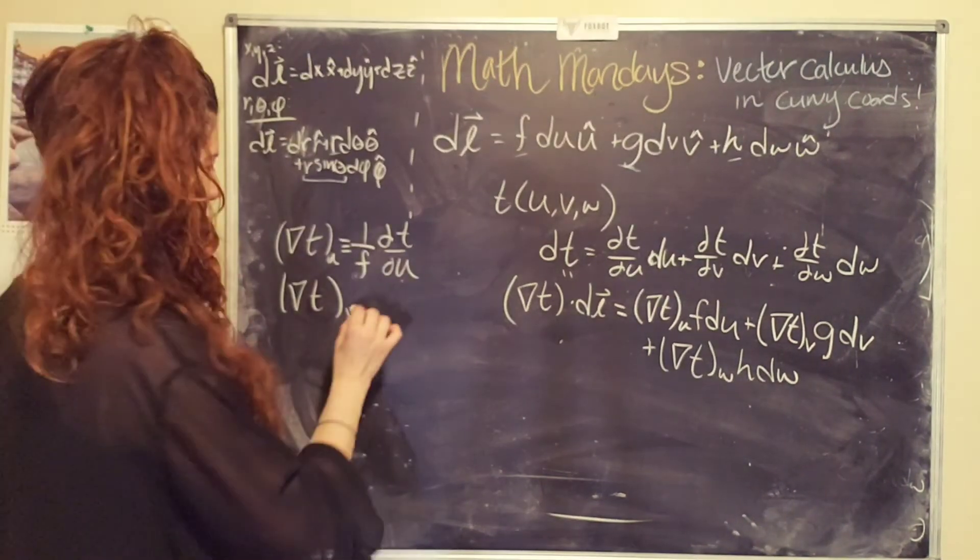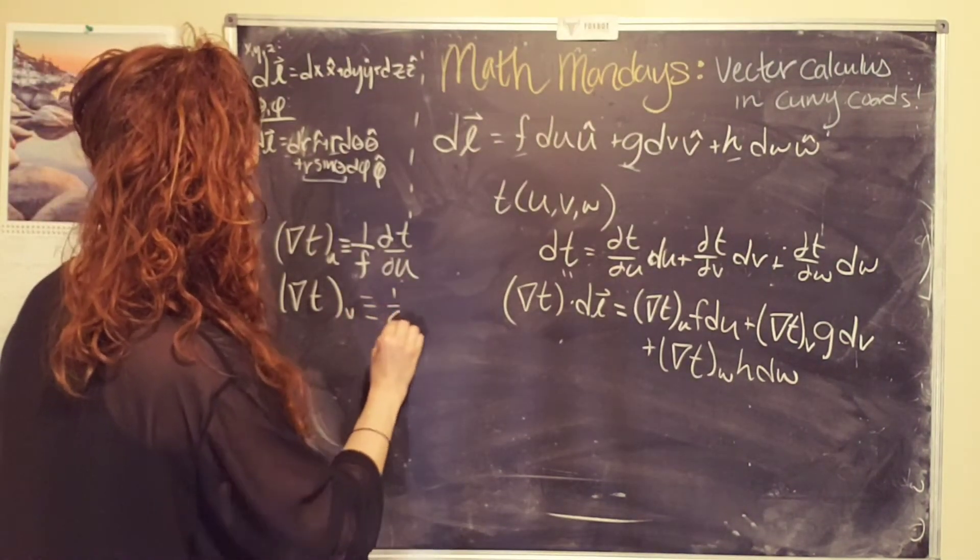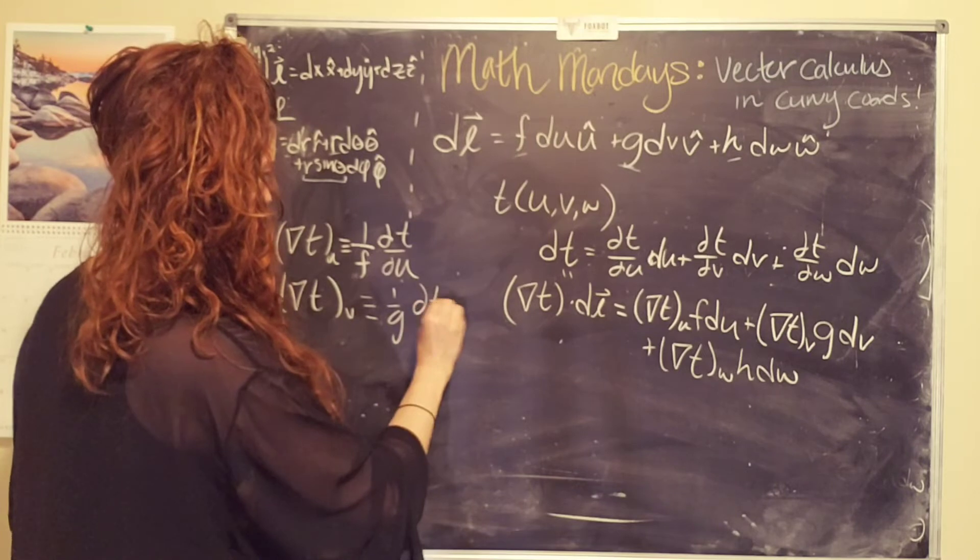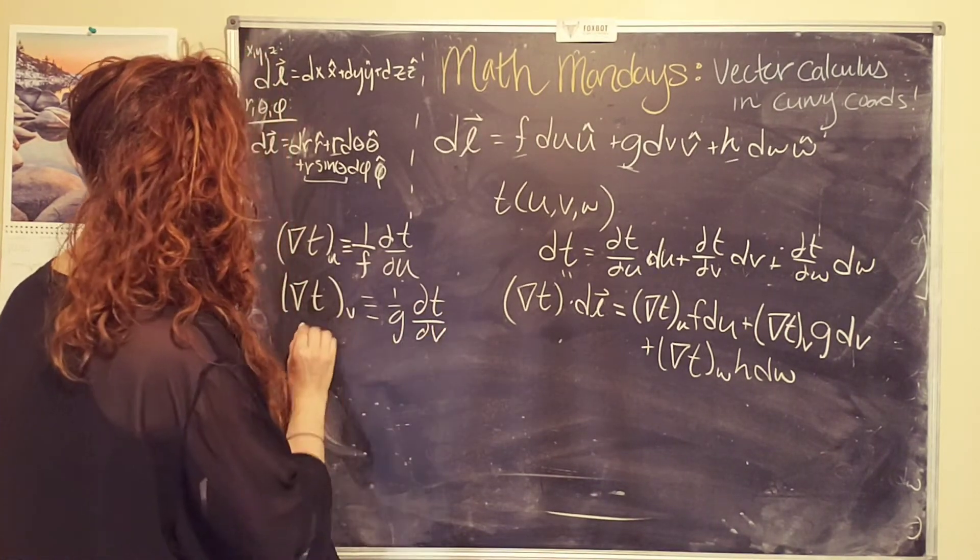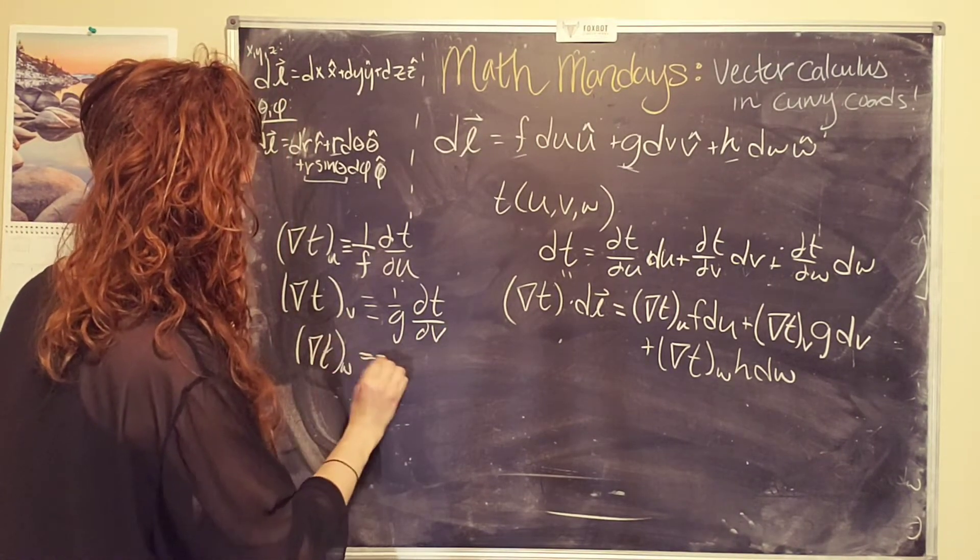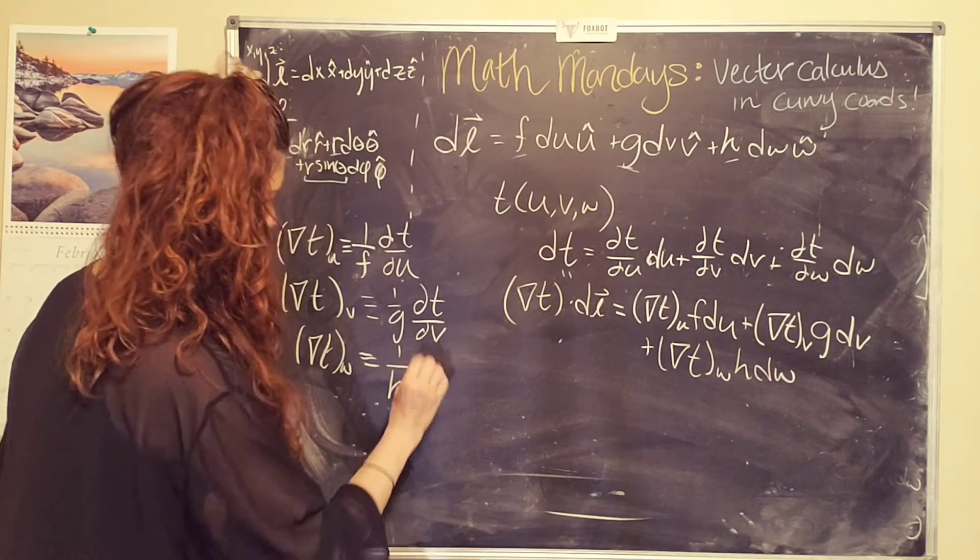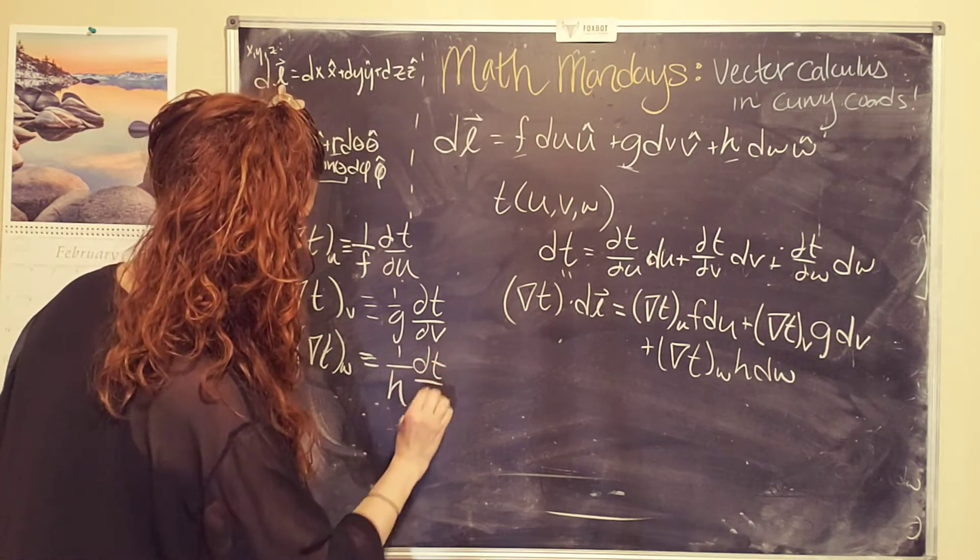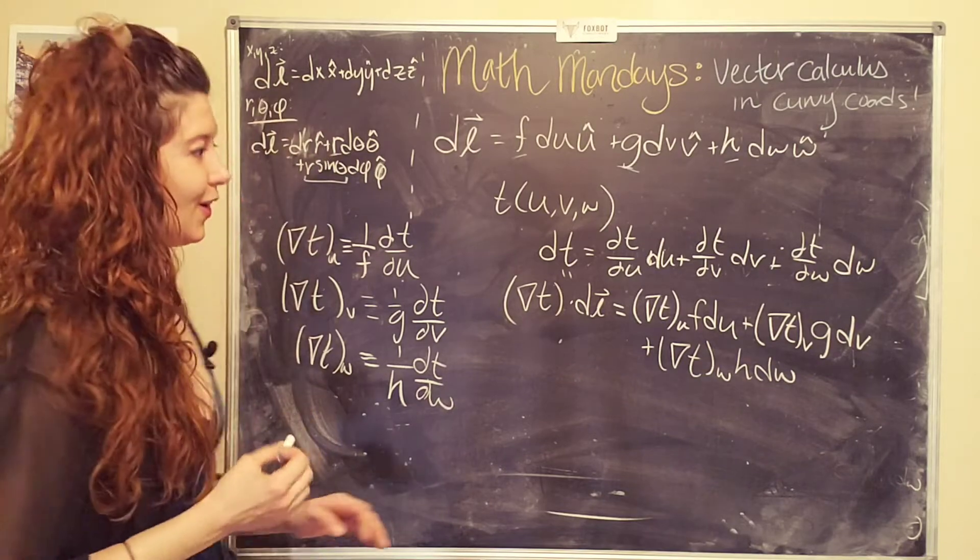So in the v direction, it's defined as 1 over g, the partial of t with respect to v, and again, in the last direction, w, defined as 1 over h, dt dw.